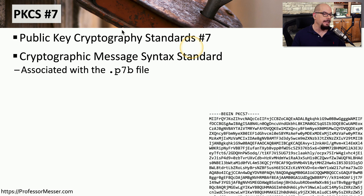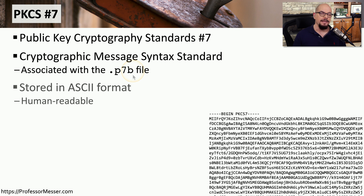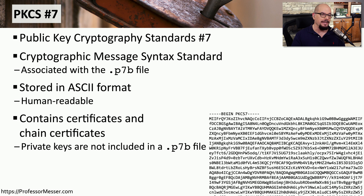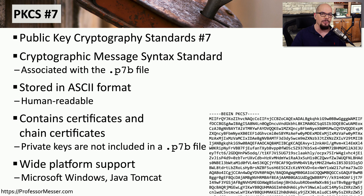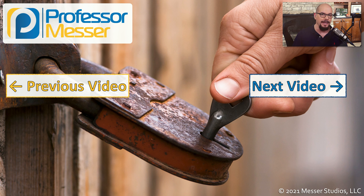Another certificate type you might find is PKCS number 7, the Public Key Cryptography Standards number 7, and you'll commonly see this sent as a .p7b file. Like the PEM format, PKCS#7 is also an ASCII file that can be read and easily transferred over email. It's common to send certificates and chain certificates using this format, but private keys are not commonly used in a .p7b file. This format is supported in Windows, Java Tomcat, and many other operating systems and applications.